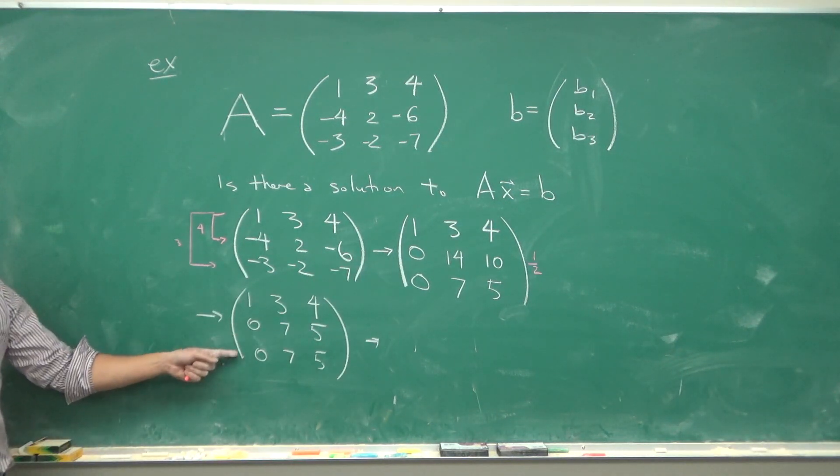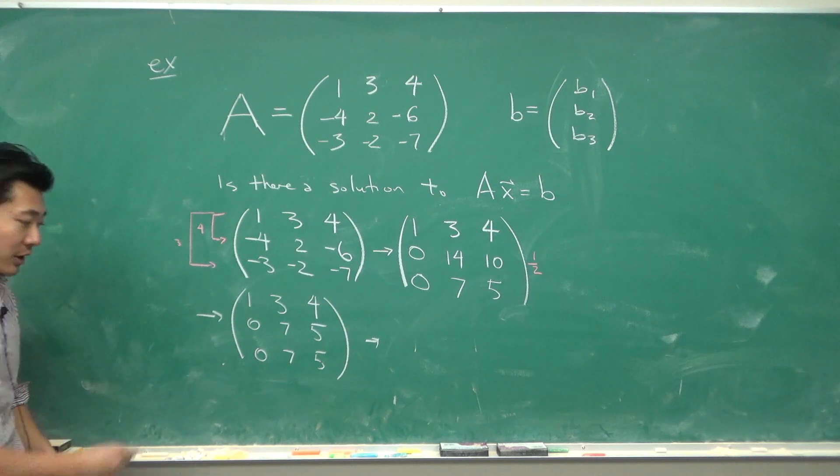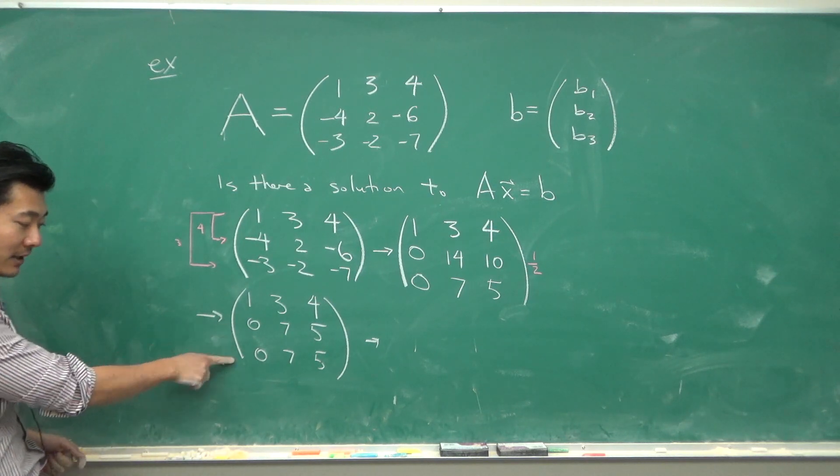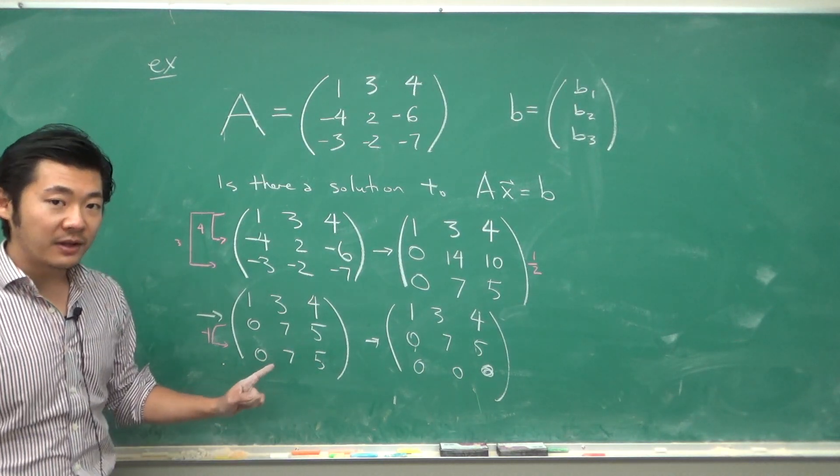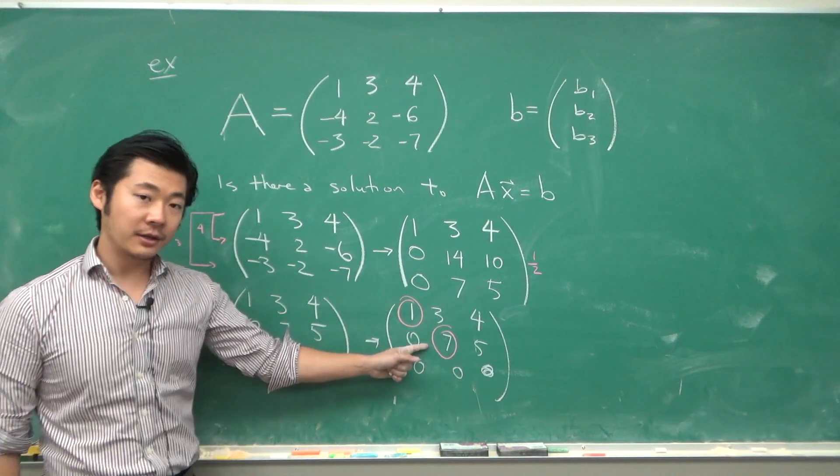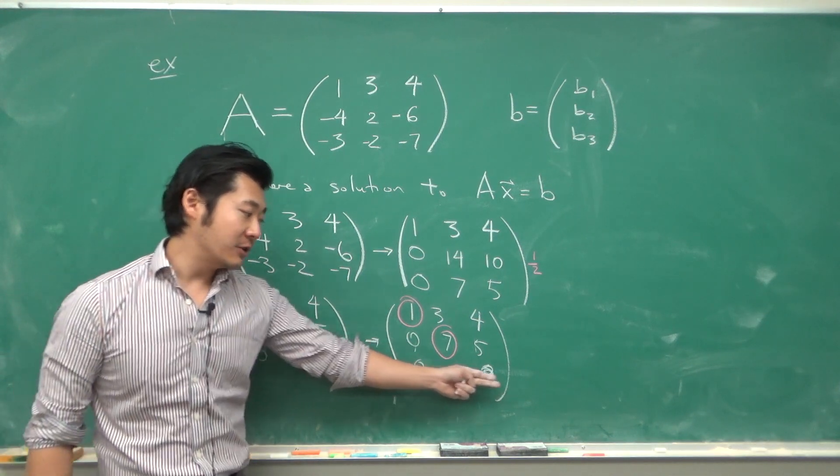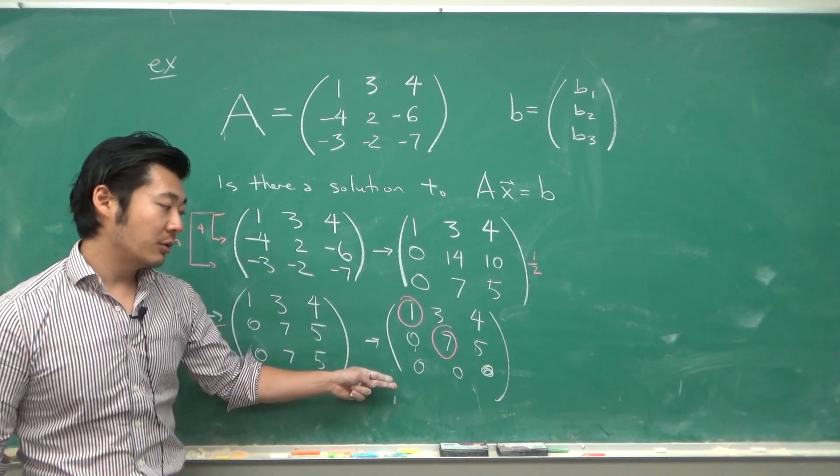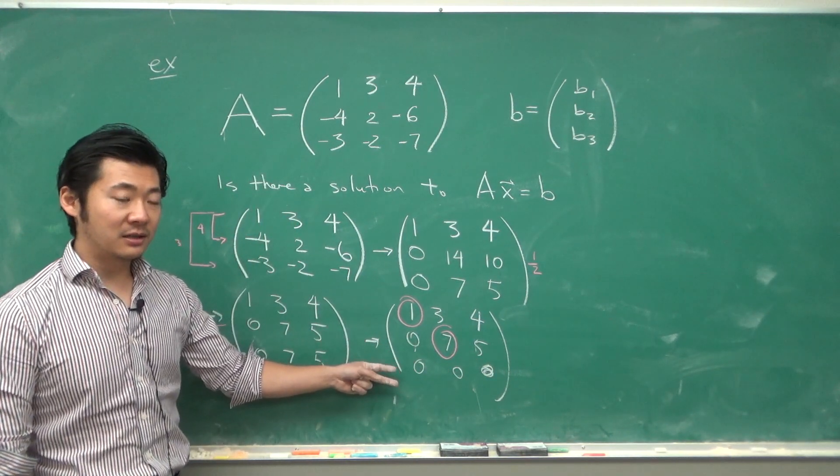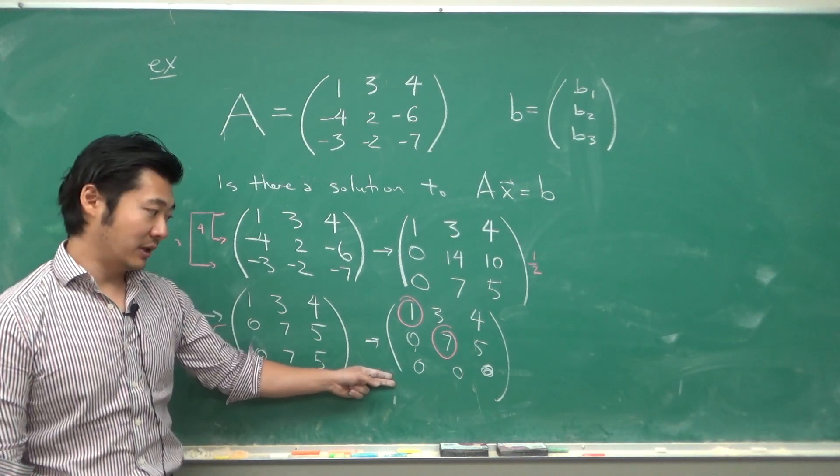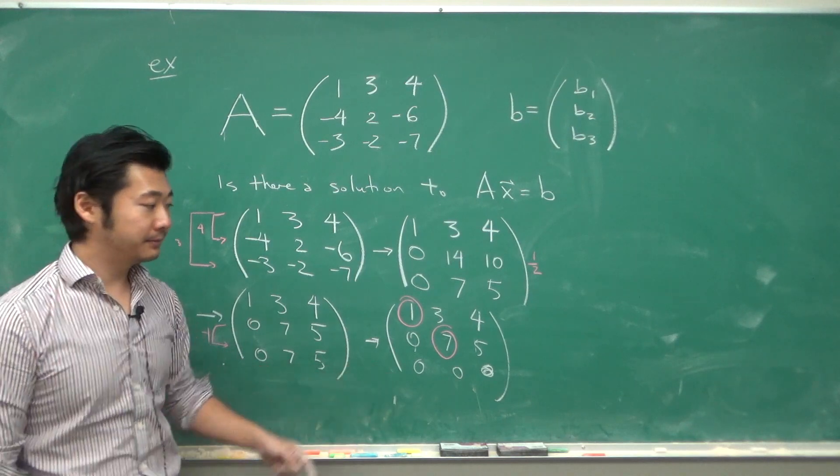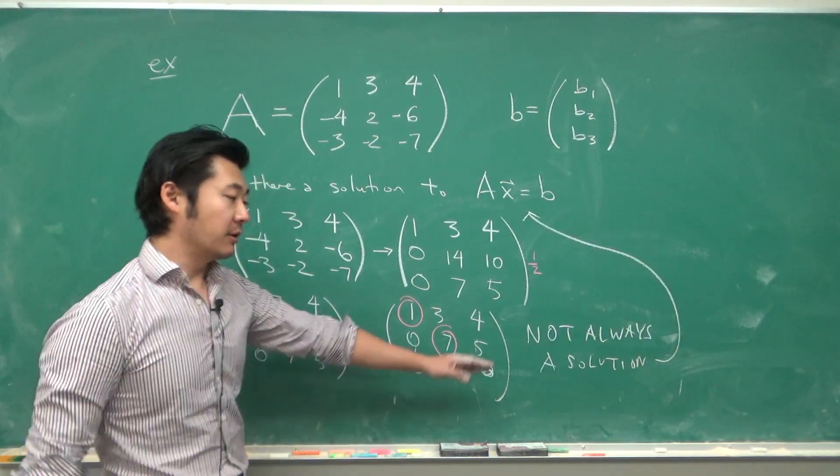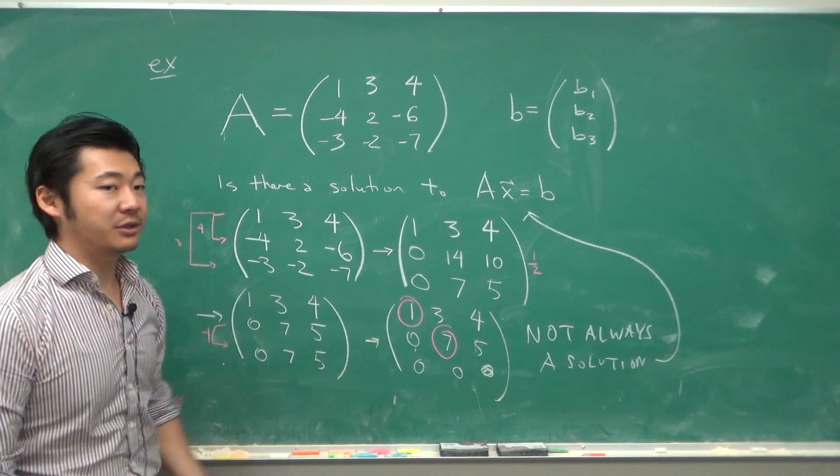Now, since these two rows are the same, we can just multiply by negative one and add it in. At this point, we can locate our pivot entries here and here, but there will not be a pivot entry on the third row because a pivot entry needs to be a non-zero entry, but there are no non-zero entries in the third row. So by the theorem, there is not always a solution to this matrix equation.